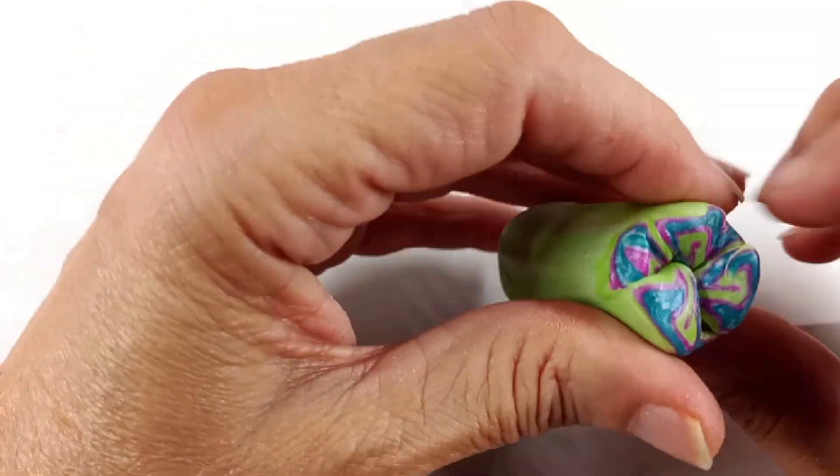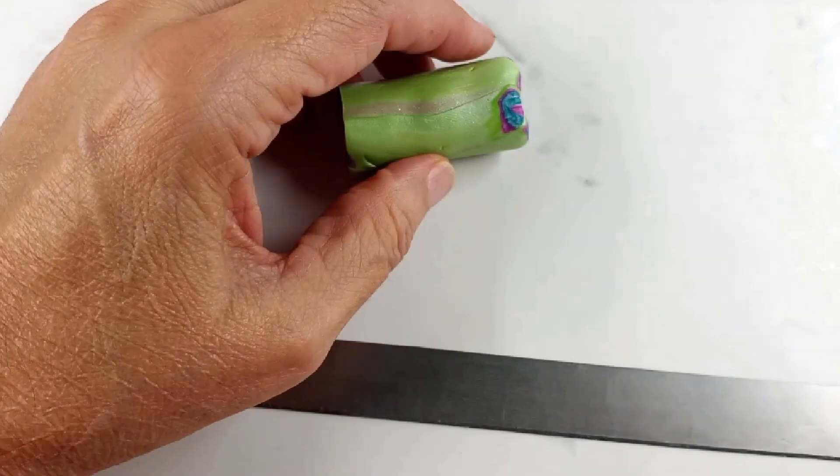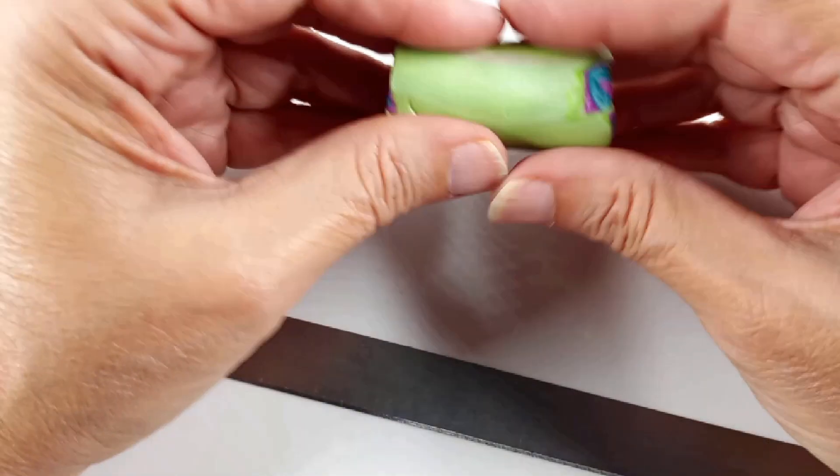So we're going to reduce this down to a couple of different sizes and then we're going to put it on a backing and we'll see how that works.